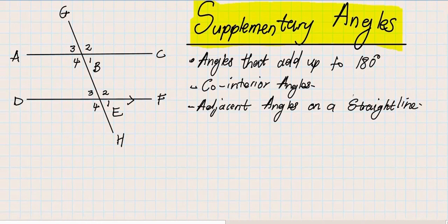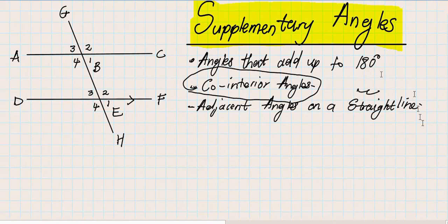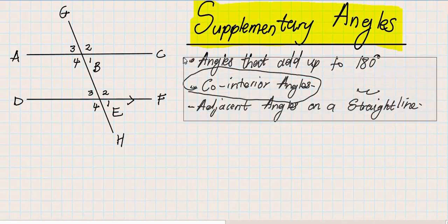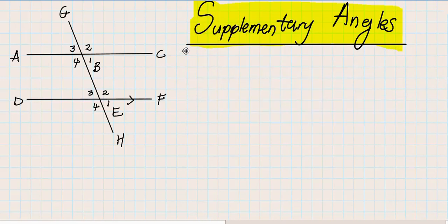Looking at this diagram, the very same thing these two types of angle relationships have in common is that when you add those two angles you will get 180 degrees. We already spoke about co-interior angles, so we won't emphasize that again. What we want to focus on is adjacent angles on a straight line, and we want to extract those from the diagram we've been working with.